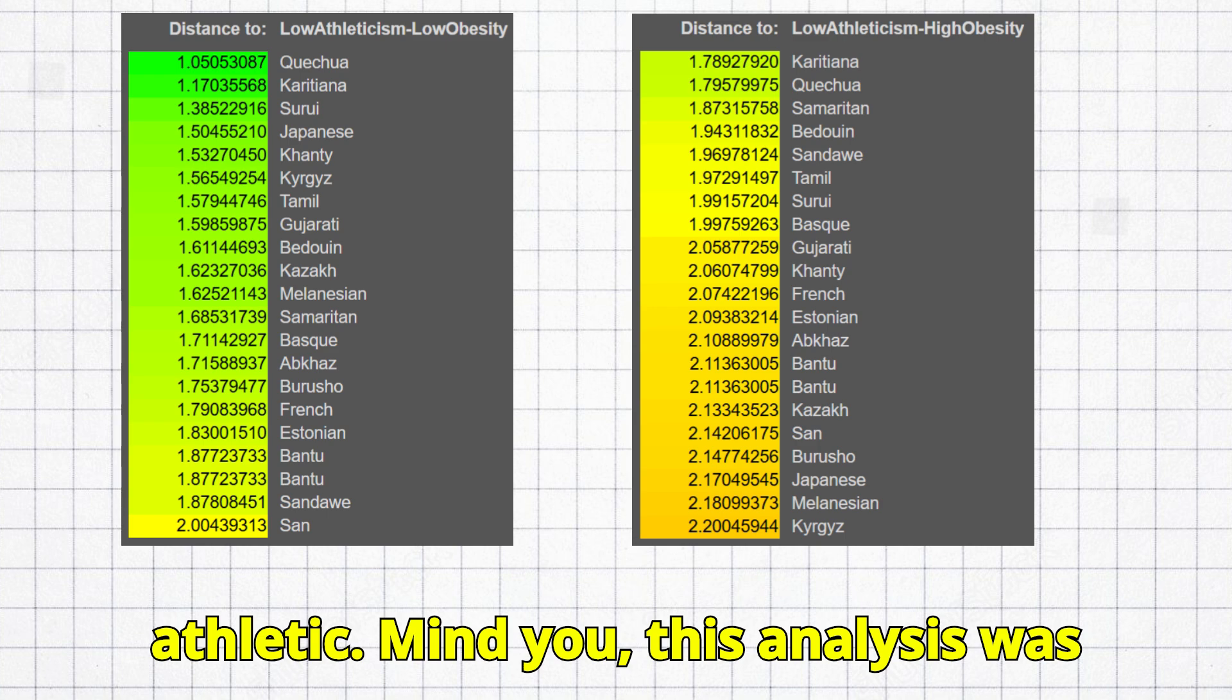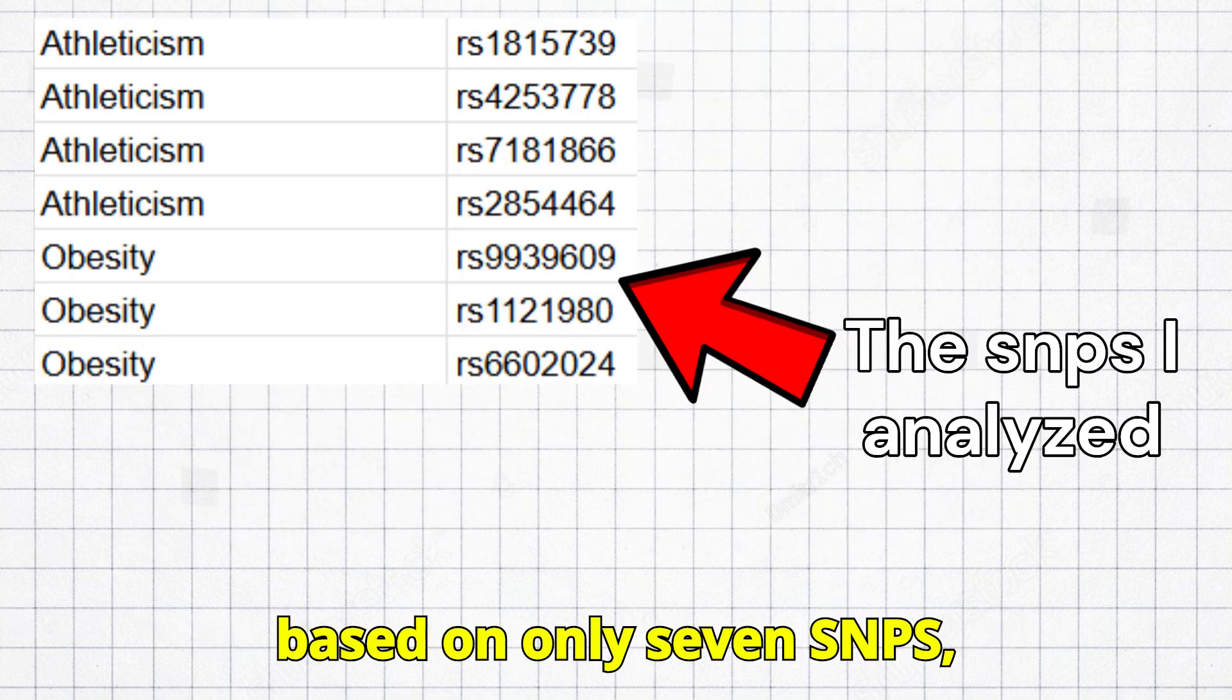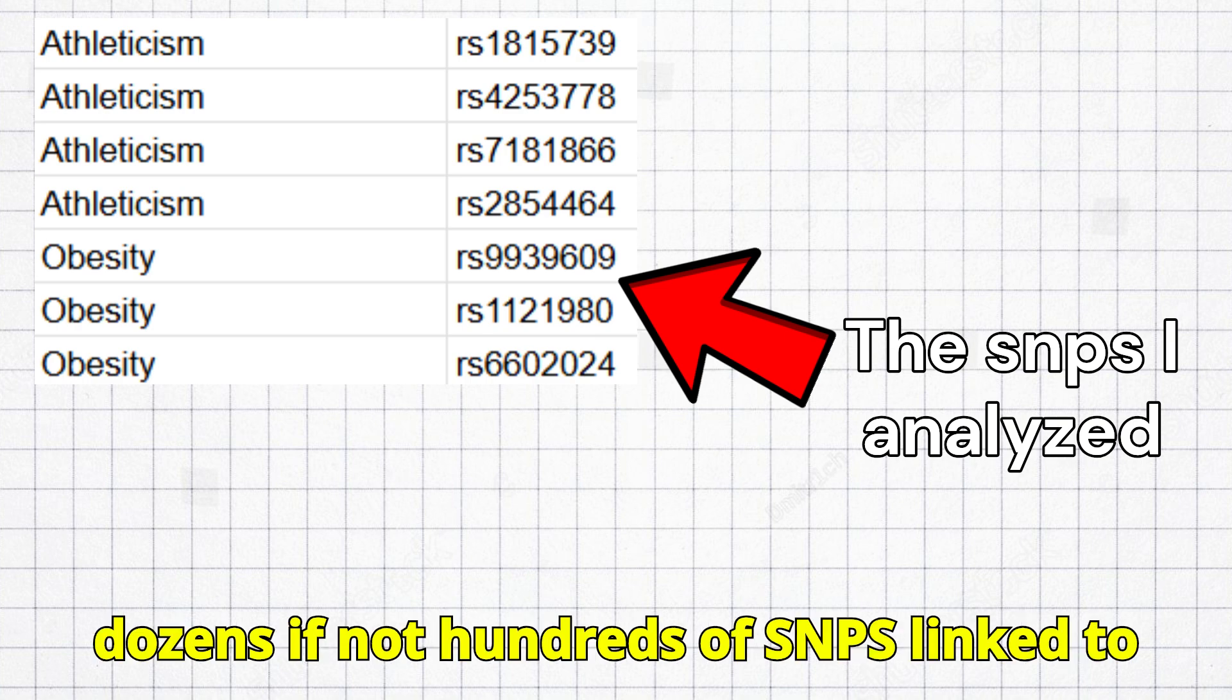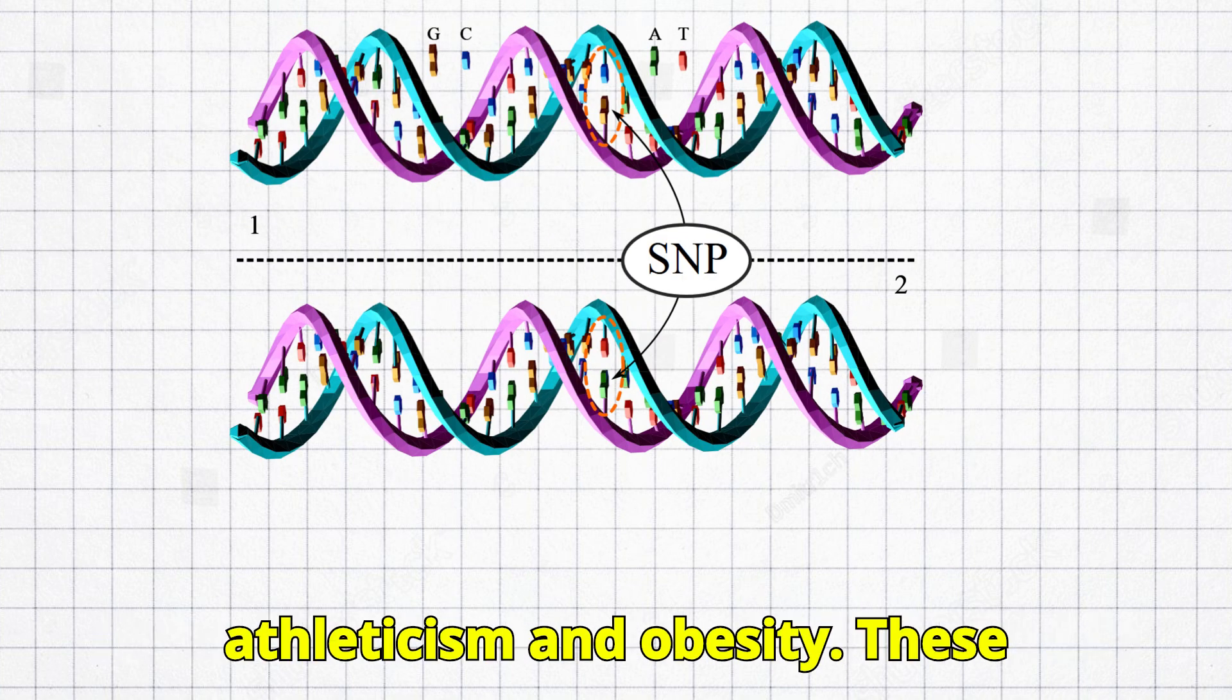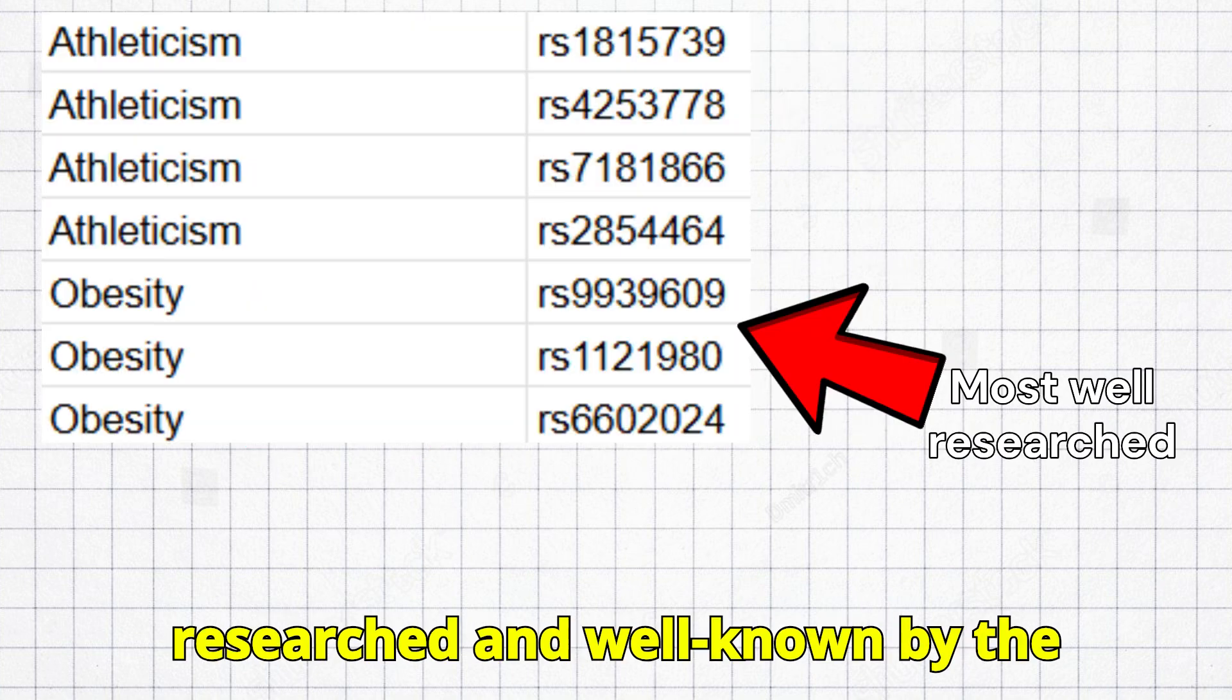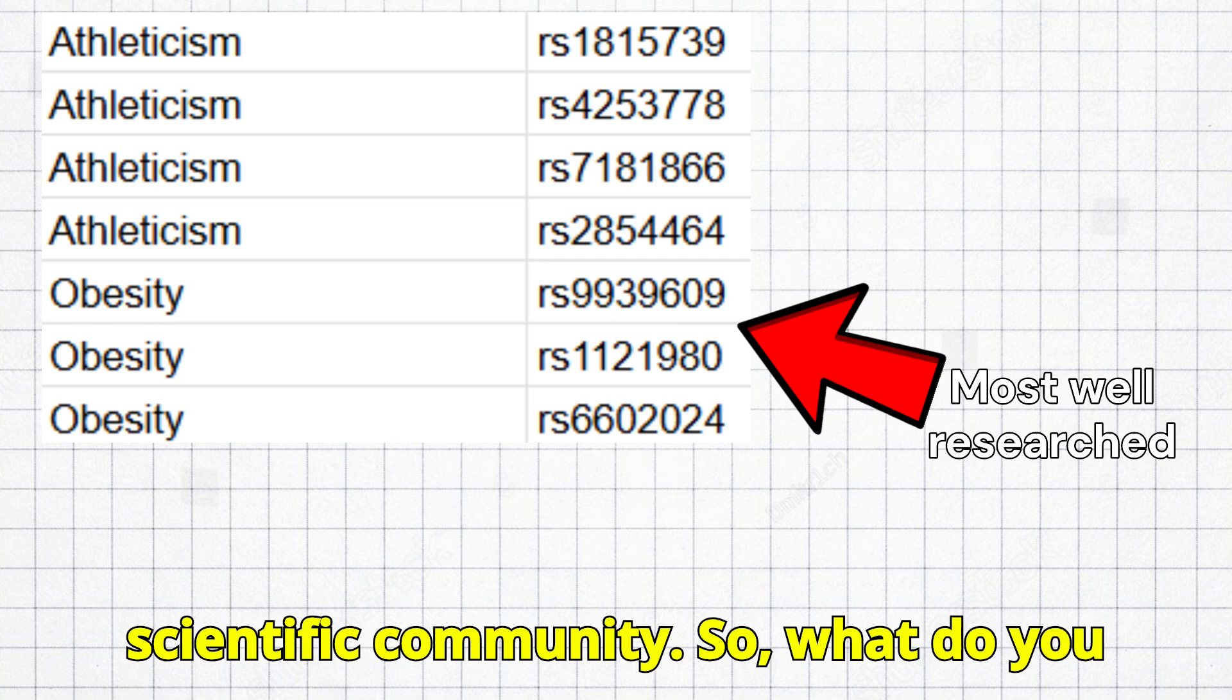Mind you, this analysis was based on only 7 SNPs, whereas in reality there are probably dozens if not hundreds of SNPs linked to athleticism and obesity. These variations, however, are the most researched and well-known by the scientific community.